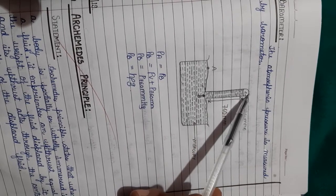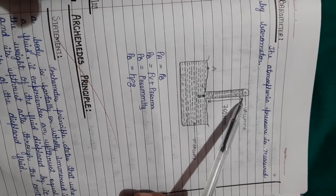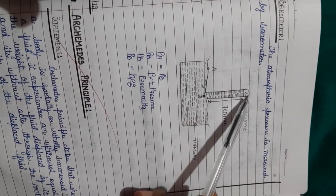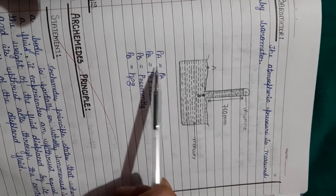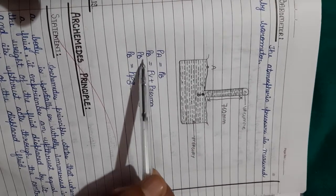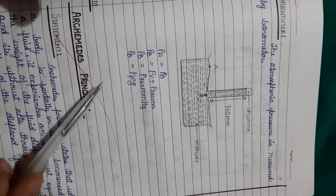The vacuum exerts zero pressure, so Pb is equal to pressure exerted by 760 mm of Hg. That will be h × ρ × g.